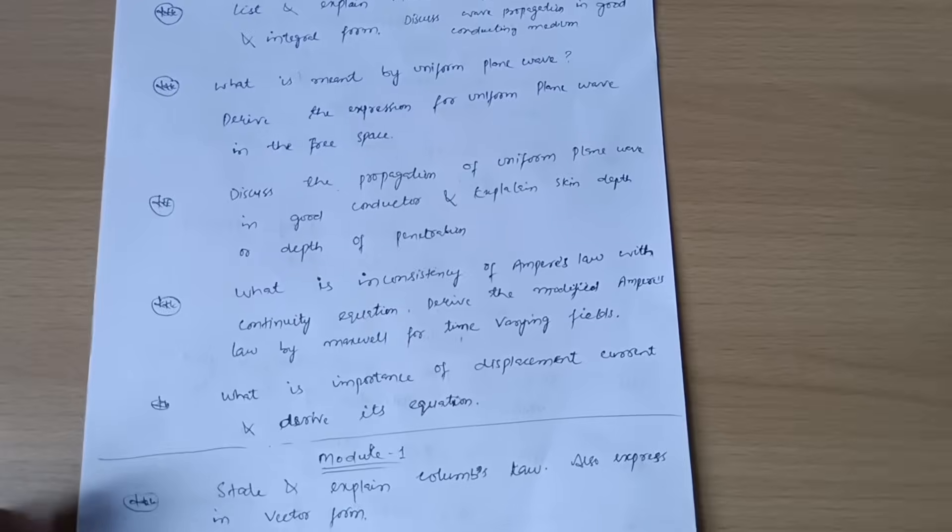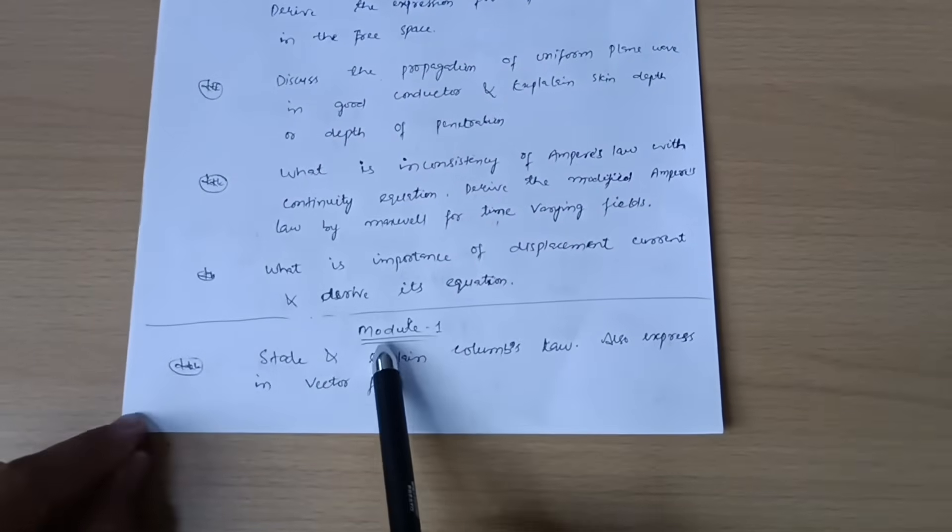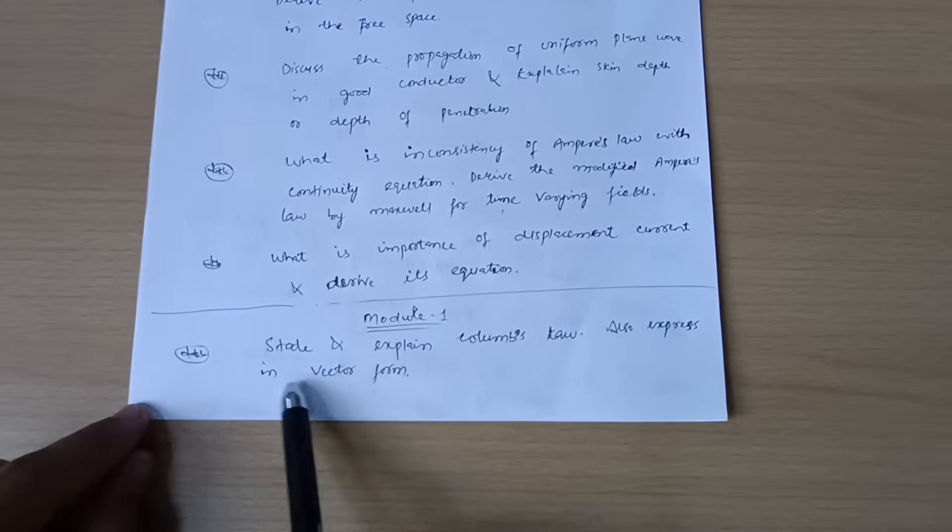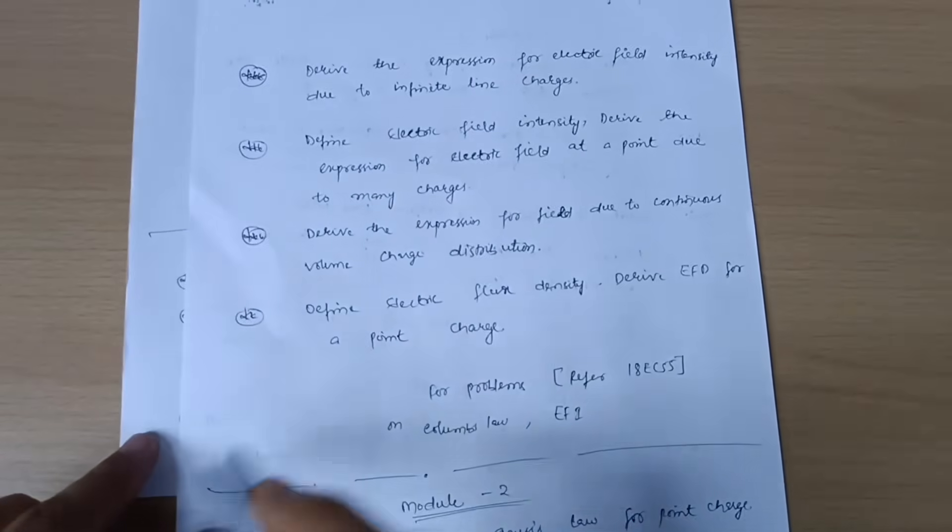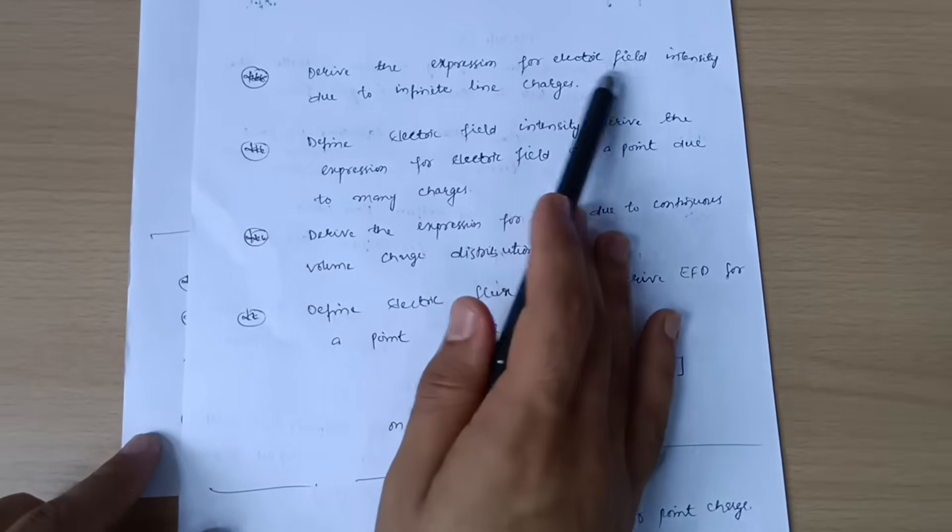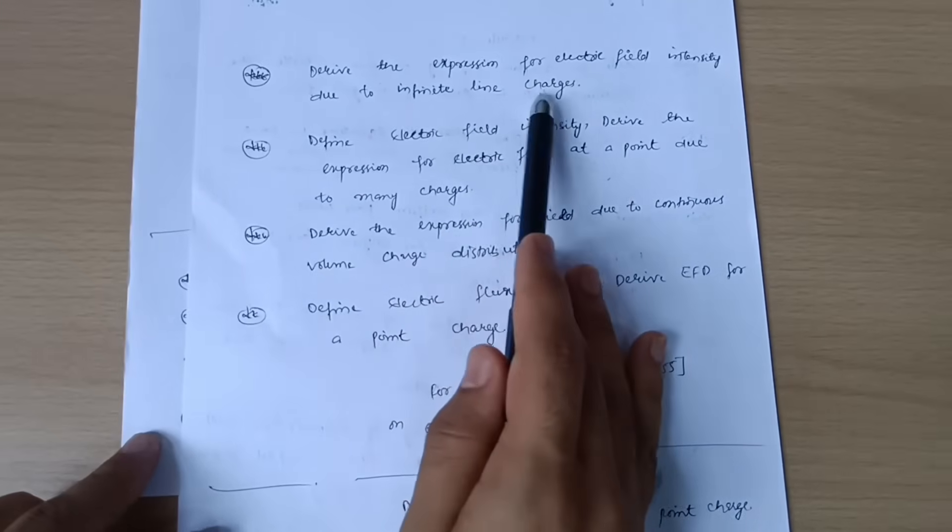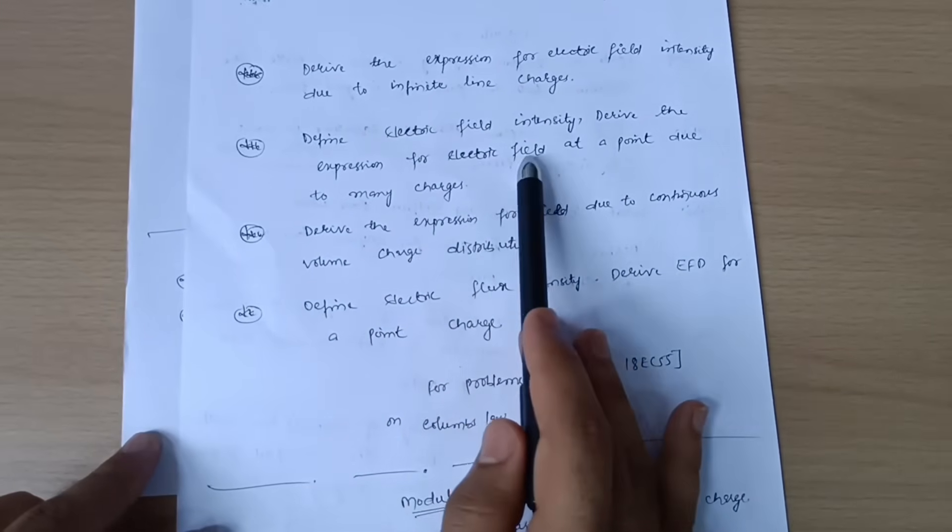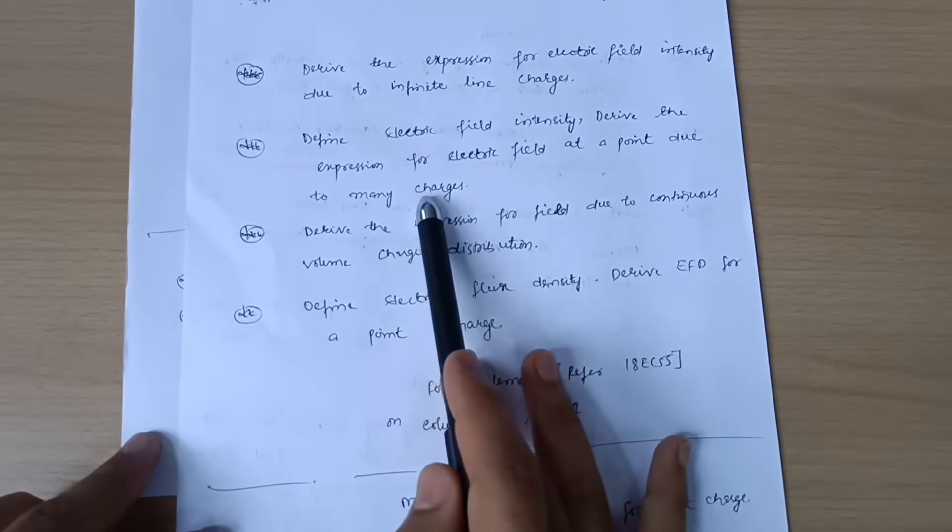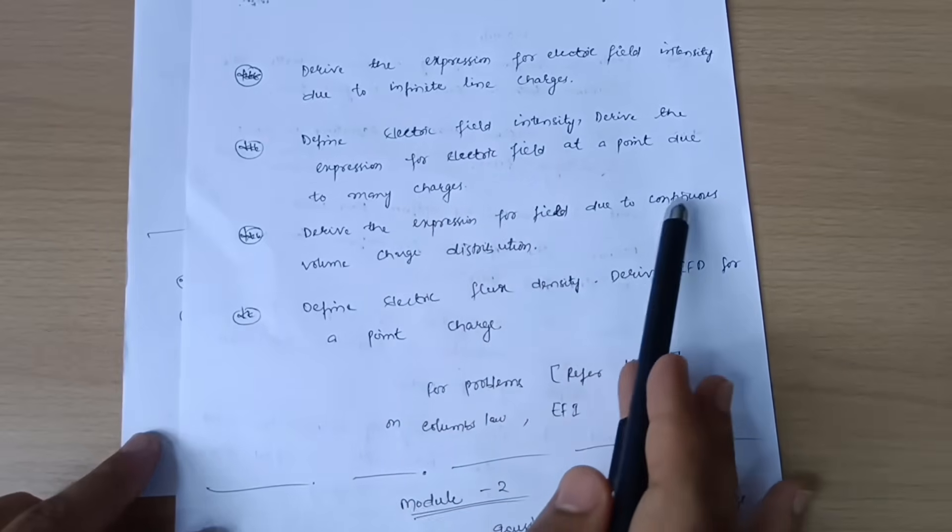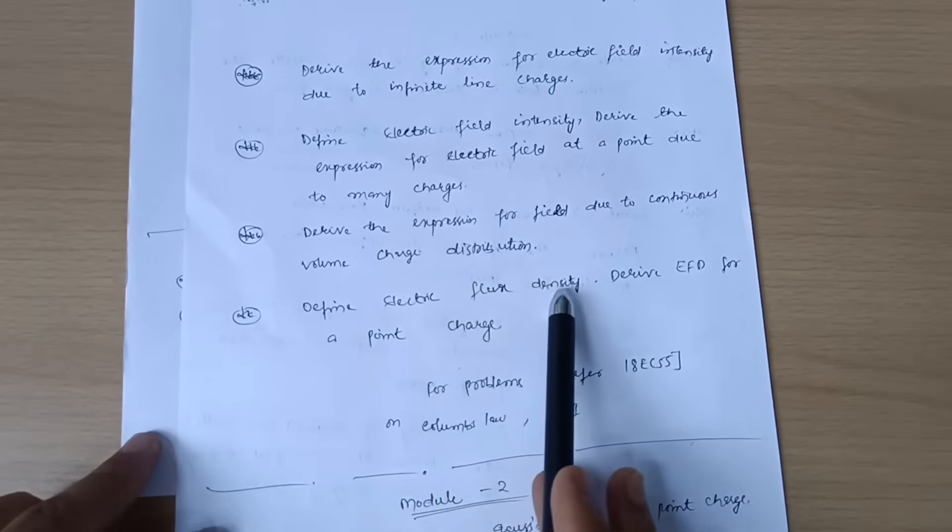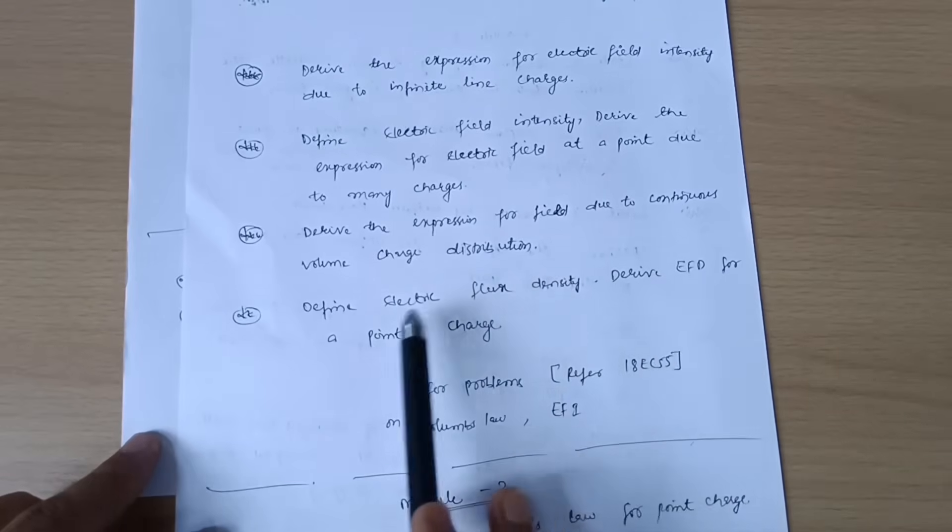Module first: State and explain Coulomb's law and express in vector form. Derive the expression for electric field intensity due to infinite line charges. Define electric field intensity and derive the expression for electric field at a point due to many charges. Derive the expression for field due to continuous volume charge distribution. Define electric flux density and derive electric flux density for a point charge.